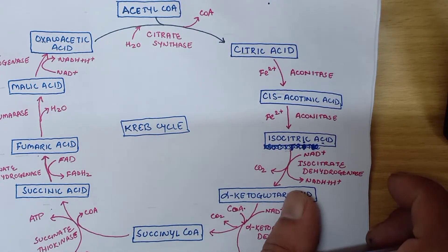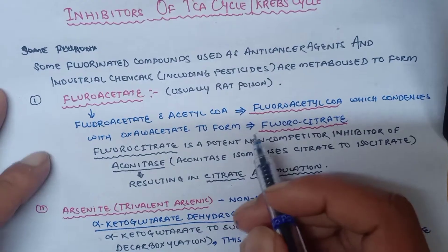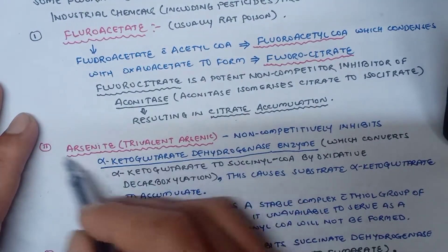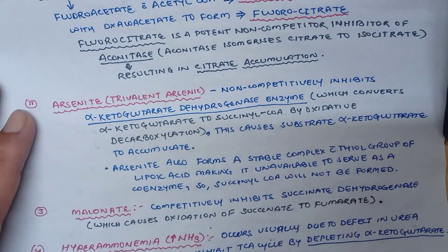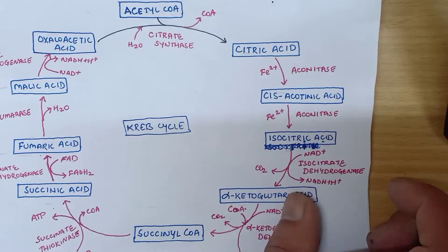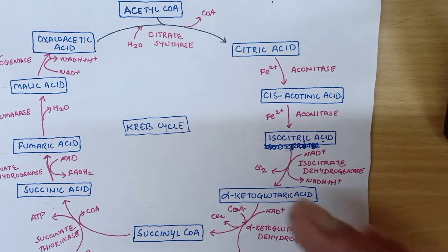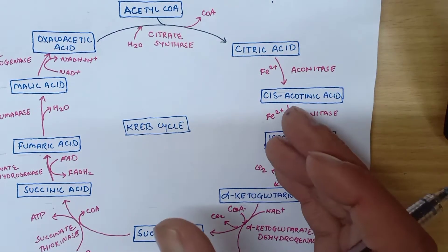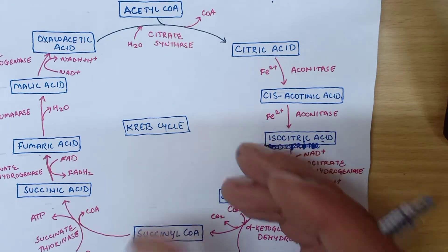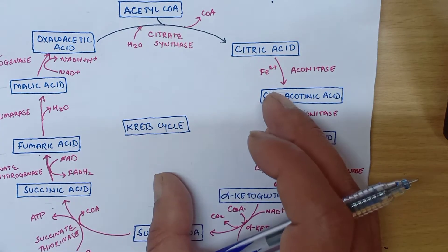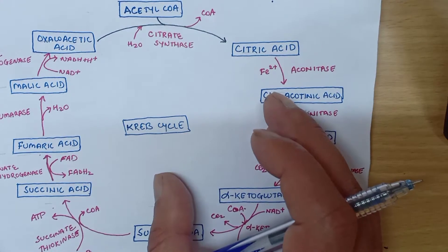We can remember four inhibitors of the TCA cycle: fluoroacetate, arsenite, malonate, and ammonia intoxication. There are some fluorinated compounds which are used as anti-cancer agents and industrial chemicals including pesticides, which are metabolized to form fluoroacetate. This fluoroacetate is a rat poison.